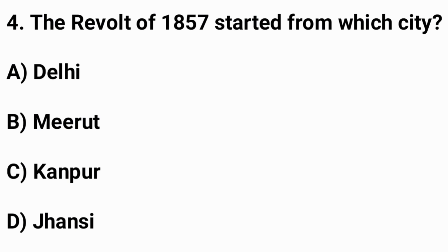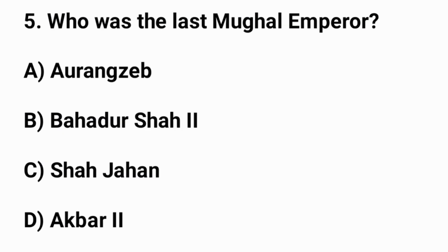Question number four: The revolt of 1857 started from which city? The right answer is option B — Meerut.